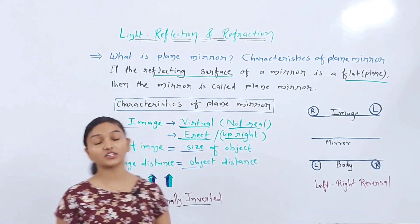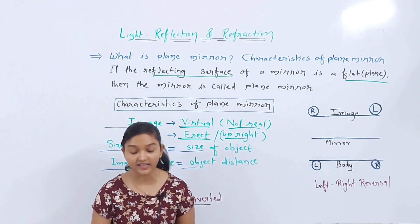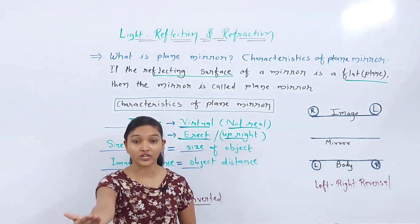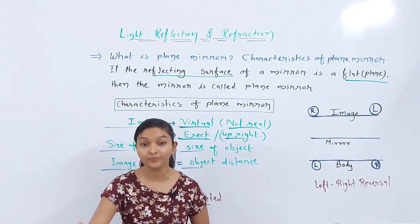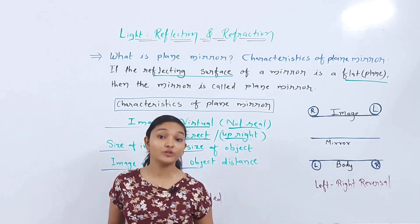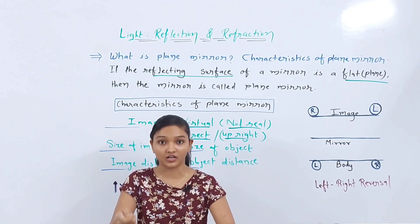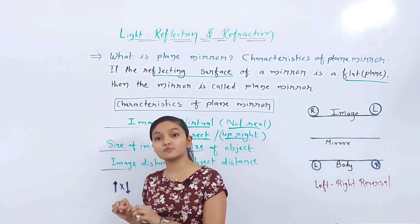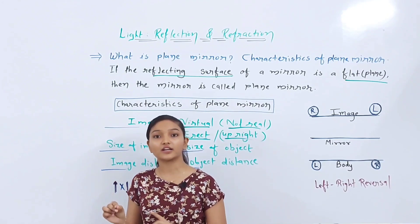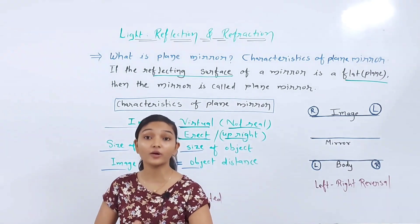Image distance is always equal to object distance. If this is my plain mirror and I am standing 10 cm away, where will the image be formed? It will be formed at 10 cm, because the distance is always equal. For example, if you have a chess board, whichever block you place in front of the mirror, you will see it at the same block distance — the distances will be equal.